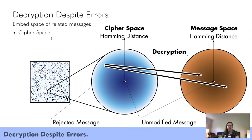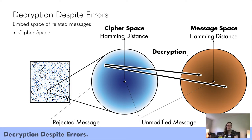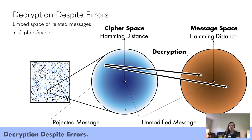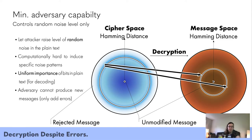From a bird's eye view, what is decryption despite errors supposed to do? In this box here we have a visualization of the cipher space in normal symmetric encryption. The white spots are invalid messages and the blue spots are valid messages — these blue spots are normally just single points in a sea of white. What decryption despite errors does is produce a halo of related messages around each original ciphertext, and these related messages should decrypt to related messages of the original plaintext in message space.